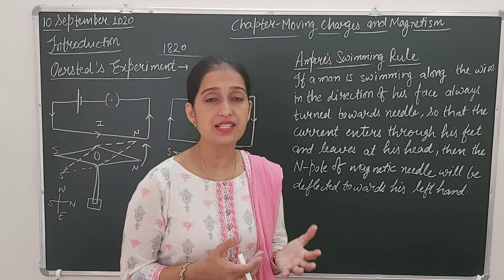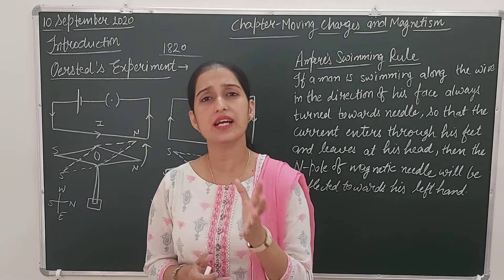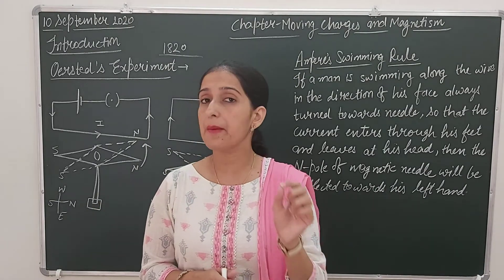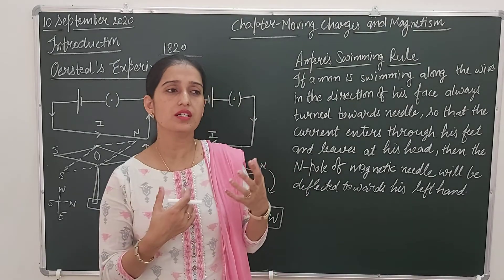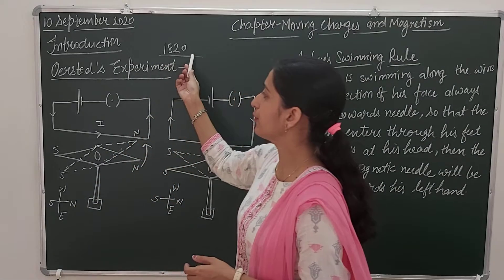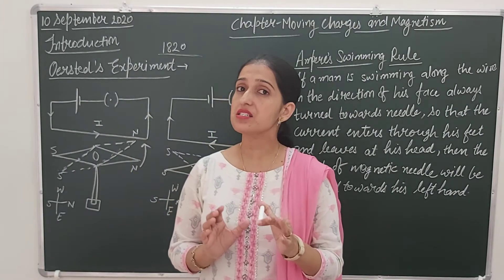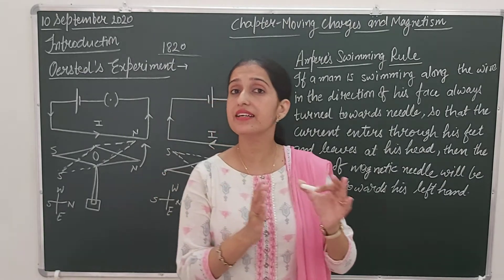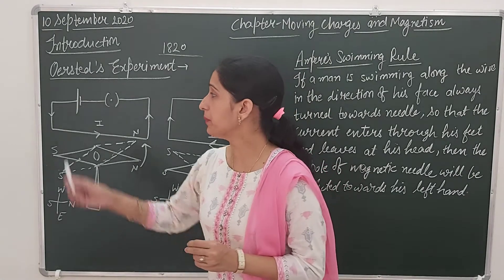In very early stages, like in the 18th century around 1802, a few scientists worked on the concept that wherever current is flowing, a magnetic field is there. But those theories and statements were overlooked. Then finally in 1820, Oersted did an experiment, and that was the proof — yes, wherever current is flowing, there is some magnetic field present. So he proved this thing.